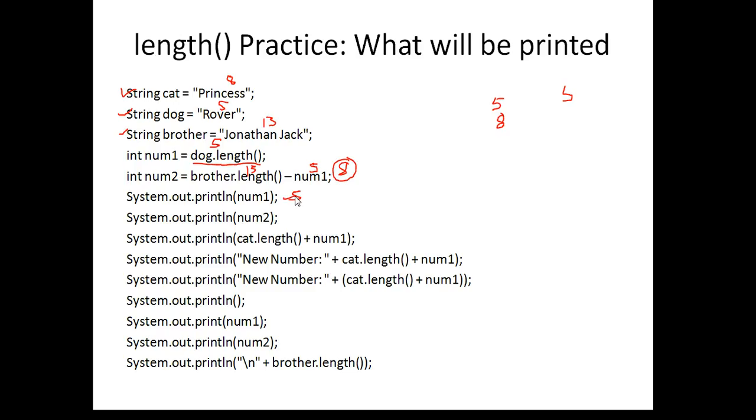So we've done this and this. The next line down says cat.length. Well, the value of or the number of characters in the cat variable is eight, and plus the value of num1 is five. So this treats this as an addition problem, and so that's 13. So it's going to print a 13 right below it.